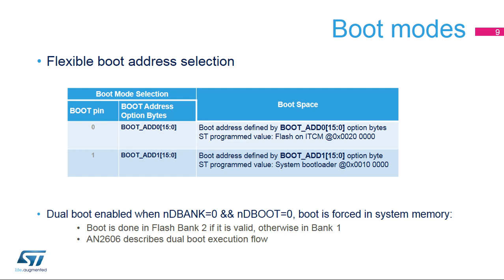The boot ADD0 and boot ADD1 address option bytes are used to program any boot memory address from 0x00000000 to 0x3FFFFFFF, which includes all flash address space mapped on the ITCM or AXIM interface, all RAM address space including ITCM, DTCM RAMs, and SRAMs mapped on the AXIM interface, and the system memory boot loader.